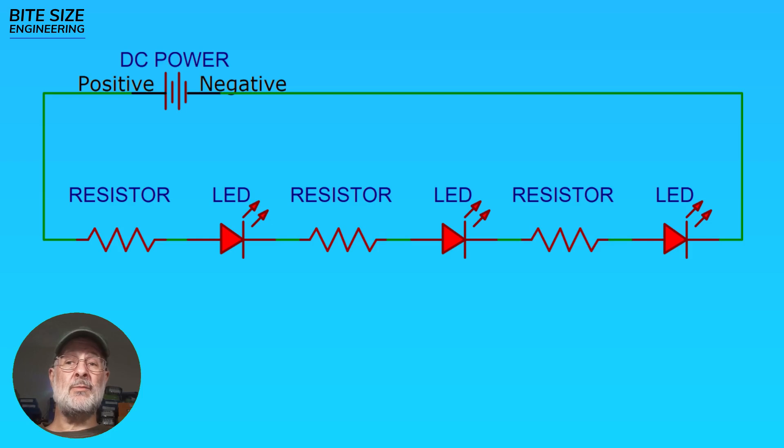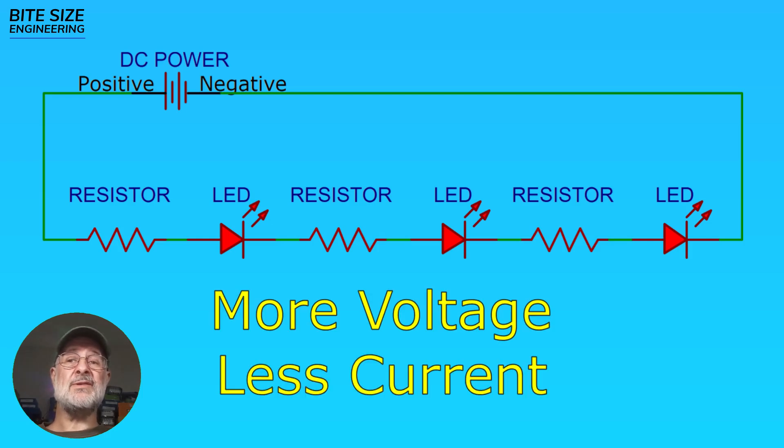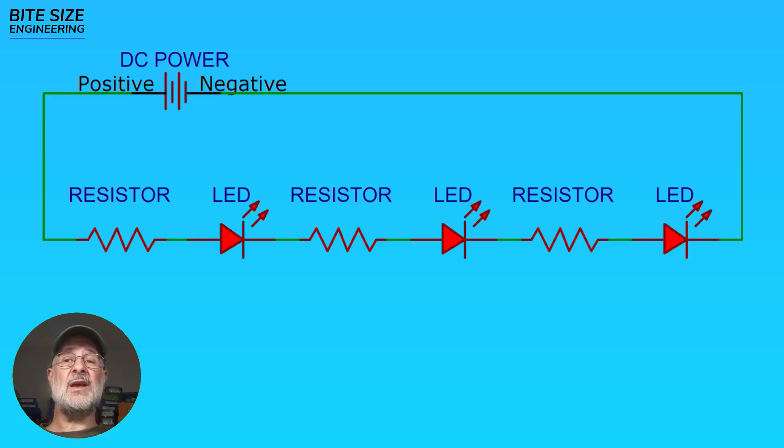Series requires more voltage but less current. The caveat is that if one of the LEDs goes out, it disconnects the whole circuit so all of the LEDs go out. This is what happens with Christmas lights sometimes.